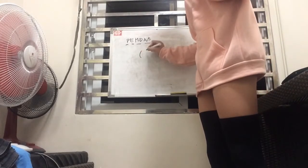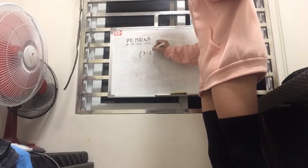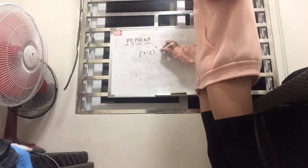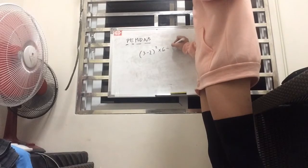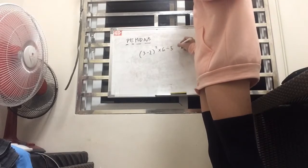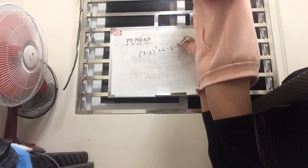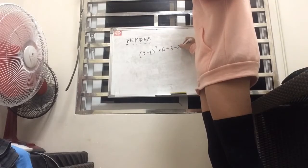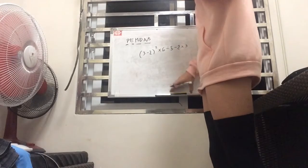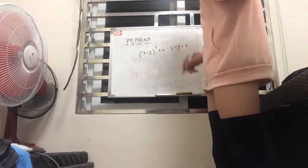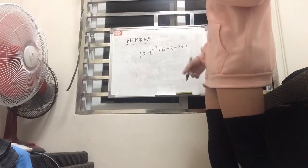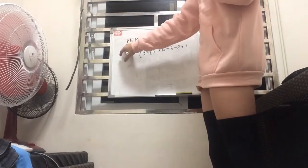So let's say we're given a big mess, such as 3 minus 2 squared times 6, divided by 5 minus 2 times 3, or actually plus, let's make it plus, 2 plus 3.